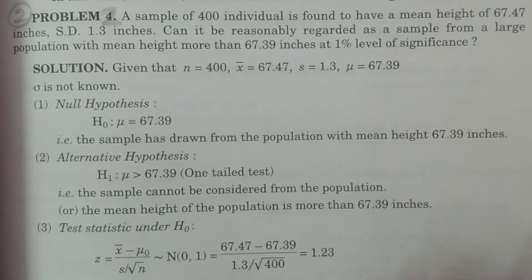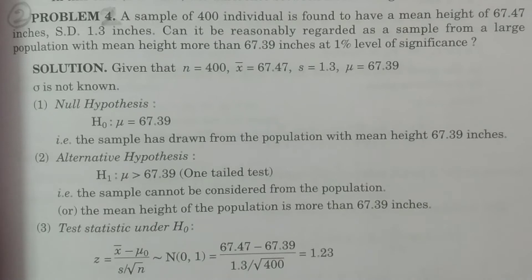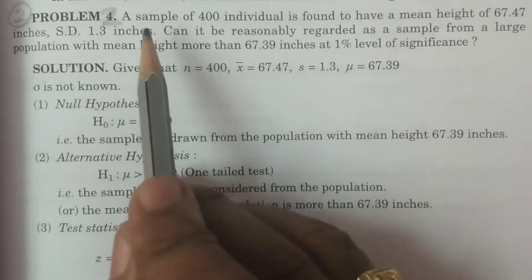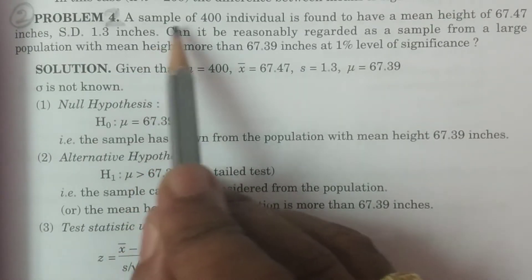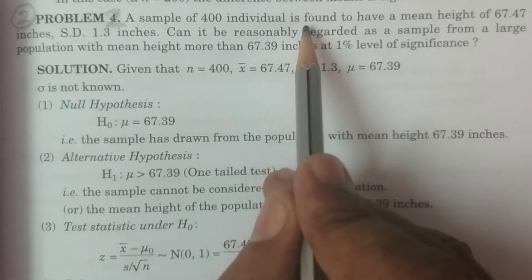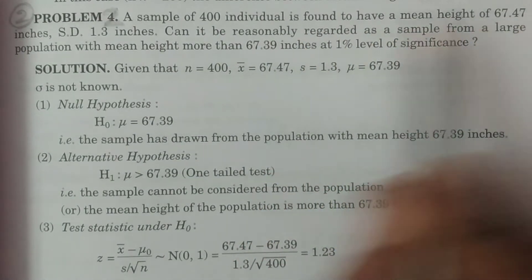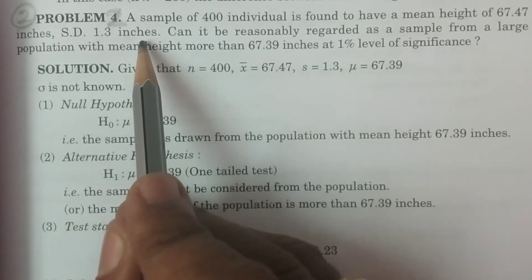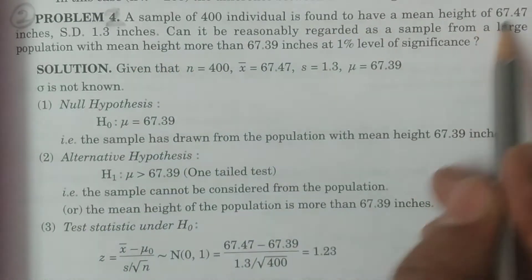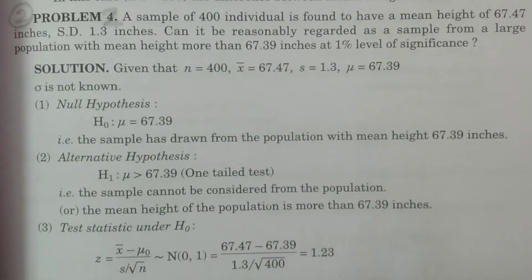Probably you have understood the problem. First of all, recognize whether it is a one sample or two sample problem. It is very clearly given that a sample of 400 individuals found to have a mean height of 67.47 inches and standard deviation 1.3 inches. There is no other sample here — only one sample is given, therefore it is a one sample related problem.